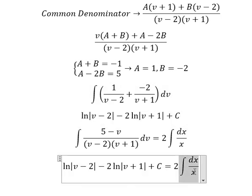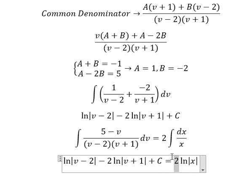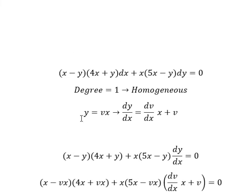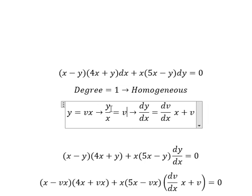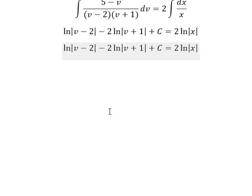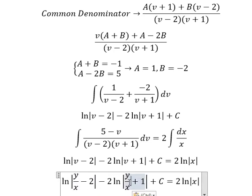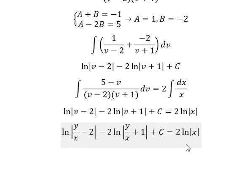On the right side we have ln of the absolute value of x. Since v equals y over x, we divide both sides by x and substitute v back as y over x. This gives us the final answer. That is the end — thank you for watching.